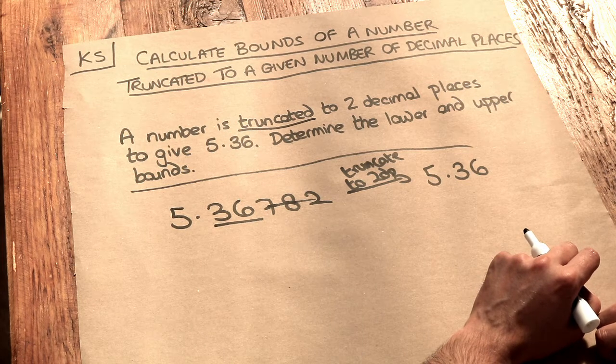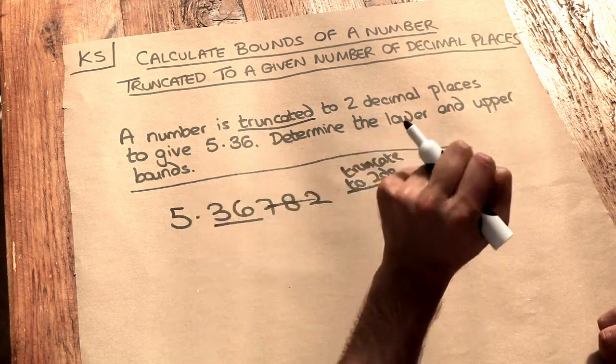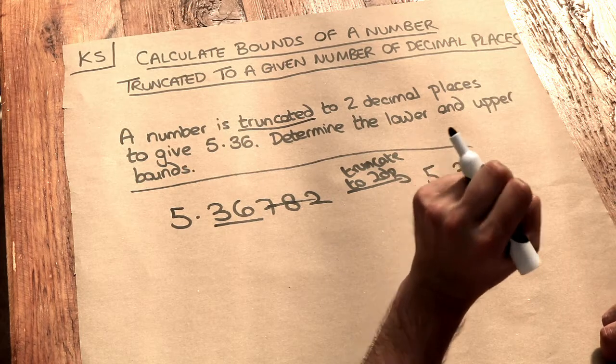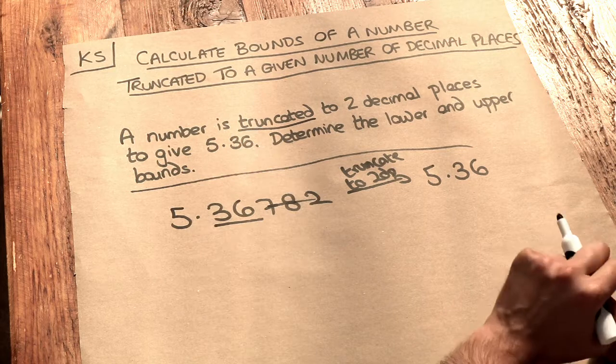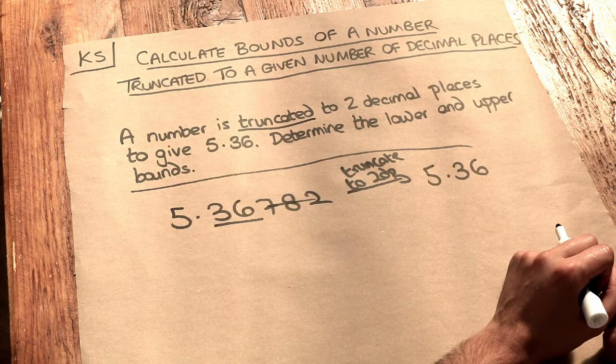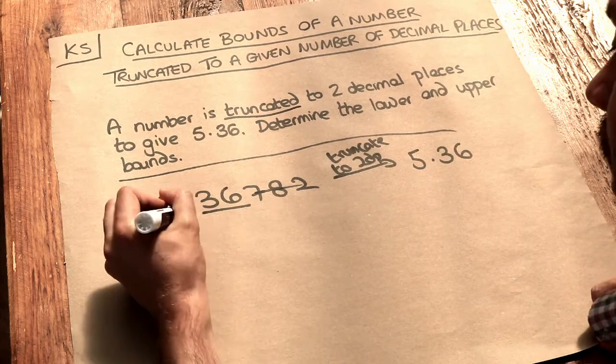So then the question is, what's the lower and upper bound of this number? That means, what's the largest and what's the smallest our number could have been that would have truncated to 5.36 to two decimal places? Well, we can get up quite high, can't we?